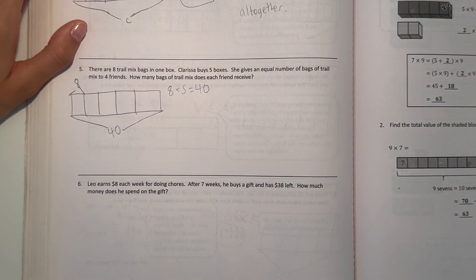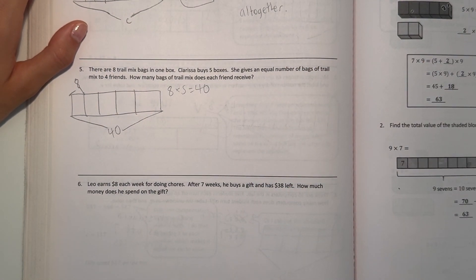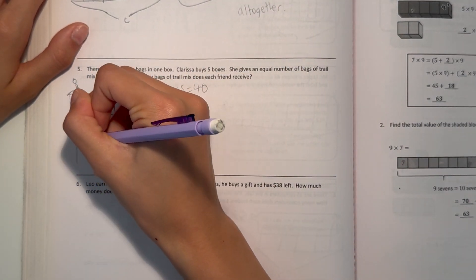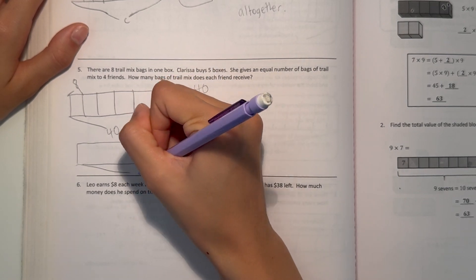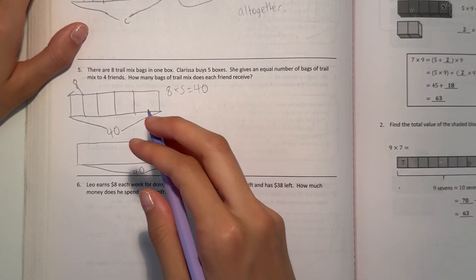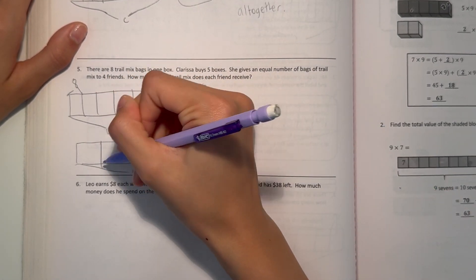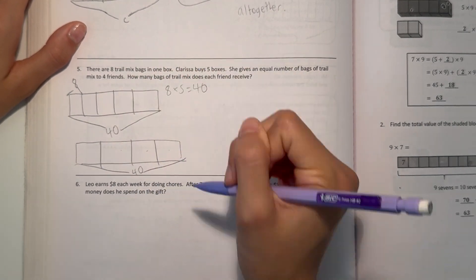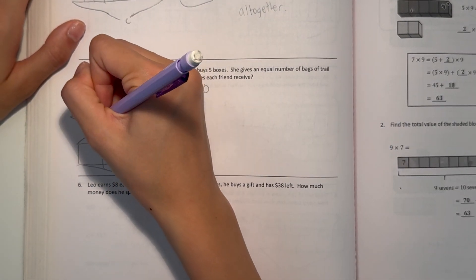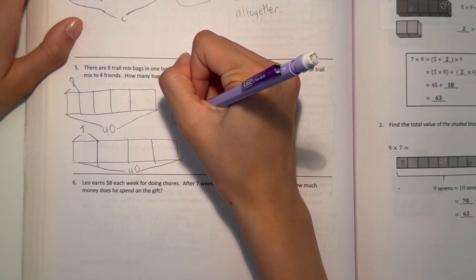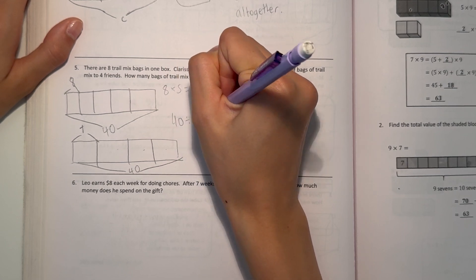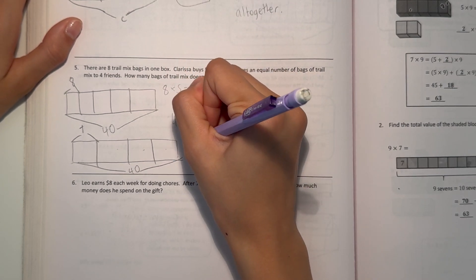But now we need to find how many bags of trail mix does each friend receive. Let's do another tape diagram here. Our total is 40, and then she has 4 friends: 1, 2, 3, 4. So how much does each friend receive? We can do T for trail mix. 40 divided by 4 equals T. So then T equals 10.